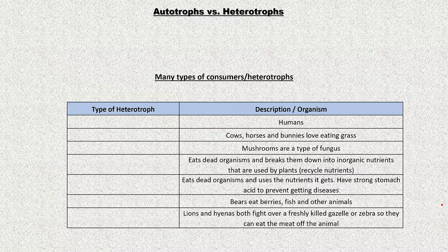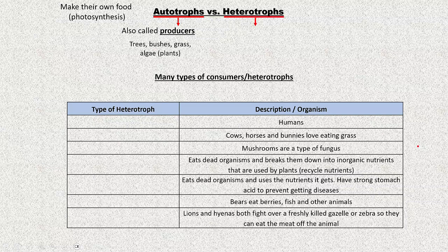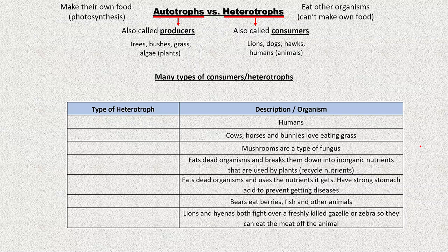Autotrophs versus heterotrophs — found in every ecosystem. Autotrophs are called producers because they make their own food — they produce it by photosynthesis. These are things like trees, bushes, grasses, algae. Heterotrophs are also called consumers — they consume or eat food because they can't make it on their own. We are heterotrophs. Also dogs, hogs, lions — animals. In the animal kingdom and the fungi kingdom, all heterotrophs.